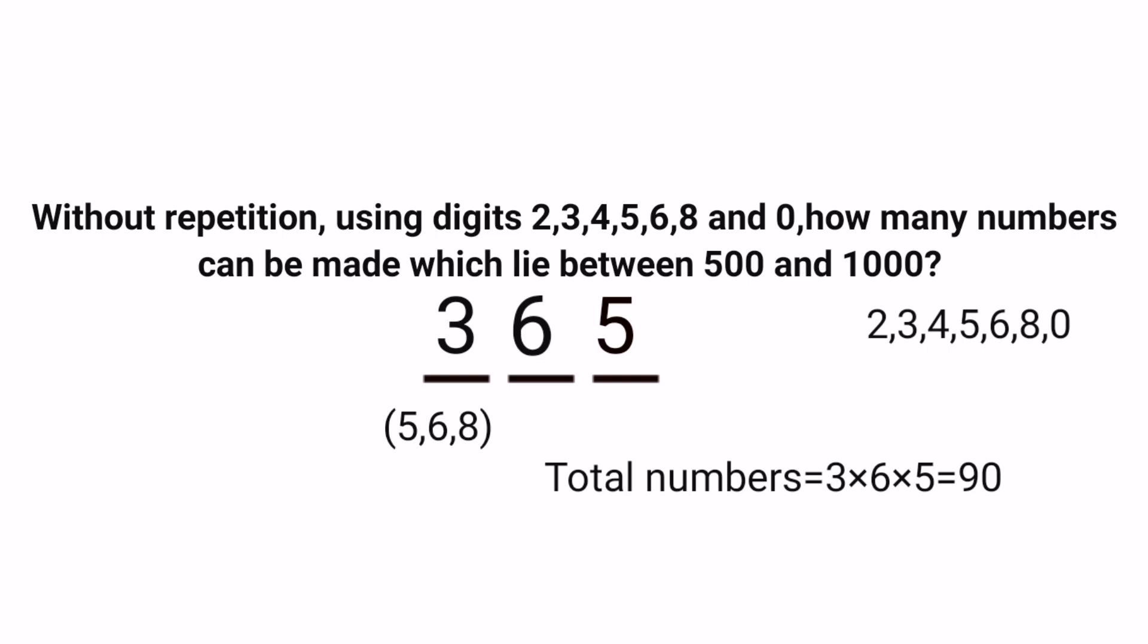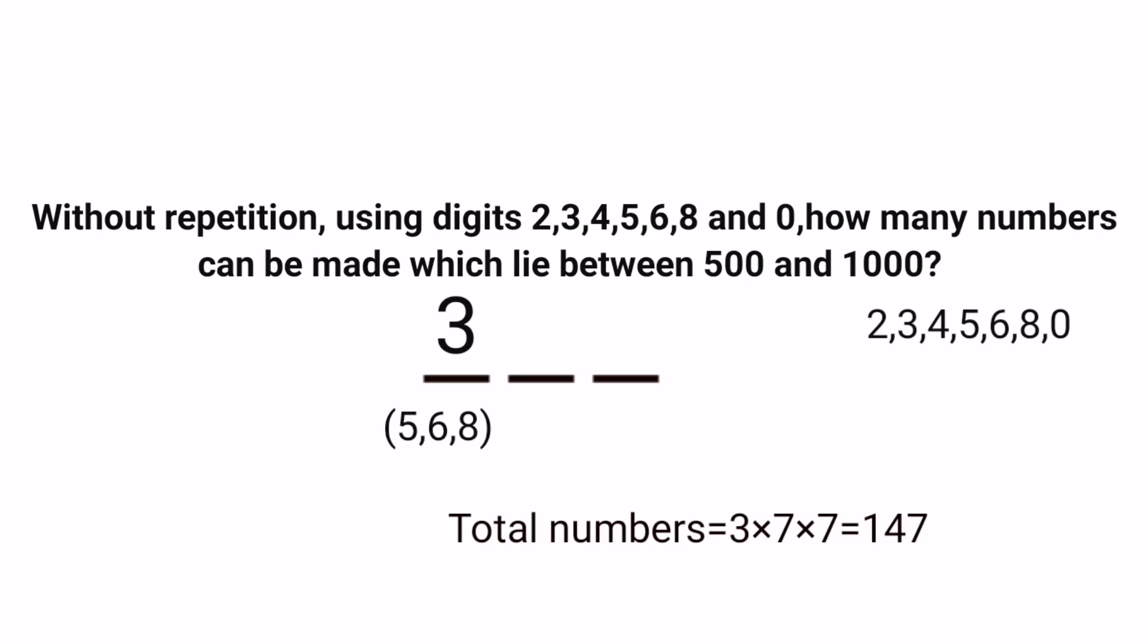Now if in the question repetition is allowed, how many possible numbers can be formed? In the first position only three numbers are possible because the number should be greater than 500 and less than 1000, so only possible chances is 5, 6, and 8. Three numbers are possible. But in the second and third position any number can come out of the seven numbers, so in the second position seven choices are there, in the third position also seven choices are there because here repetition is allowed. So how many numbers can be formed with repetition? It is 3 × 7 × 7. 3 × 7 is 21, 21 × 7 is 147 numbers. Hope this is clear to everyone.